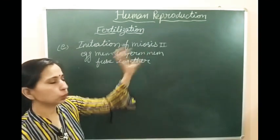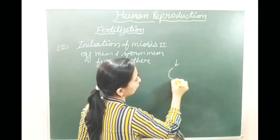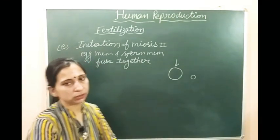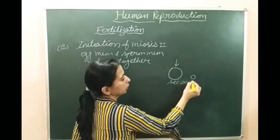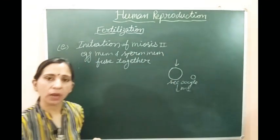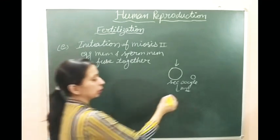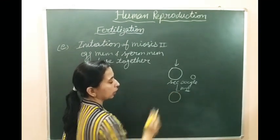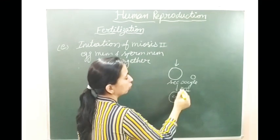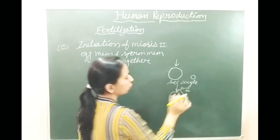Before that, meiosis one has already happened and the secondary oocyte is formed. Meiosis one produces a large secondary oocyte, and one polar body is formed. After that the secondary oocyte undergoes meiosis two, which will also form two structures: one is the egg (ootid or oocyte) and another is the second polar body.